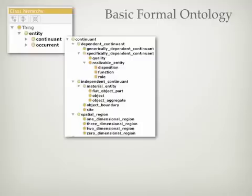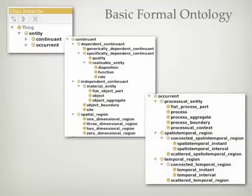Continuants are those things that continue to exist in time. They are contrasted with occurrences, which occur or unfold themselves through time. Occurrences include natural processes such as weather events and biological processes, and planned processes such as political events and targeting events. An example of a process aggregate would be a series of related military engagements that make up a battle, and then the series of related battles that make up a war.